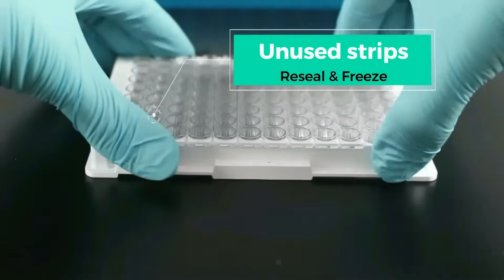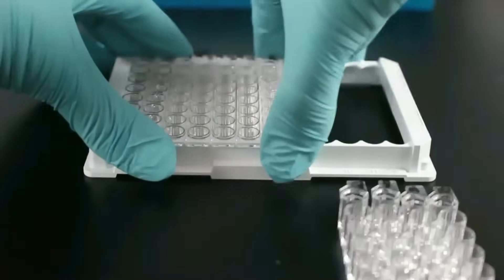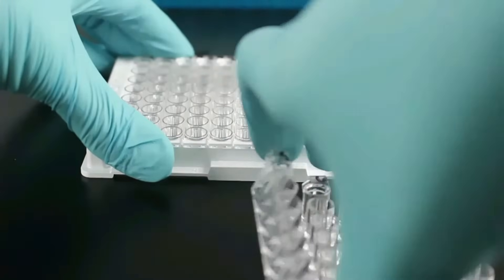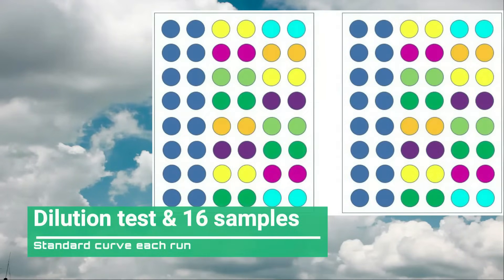If this is your first step, we've got you. Our plates come with removable strips that can be resealed and frozen back. All you have to keep in mind is that each run requires a duplicate standard curve. Our kit comes with enough lyophilized standard for two separate runs. Here are a few run options.